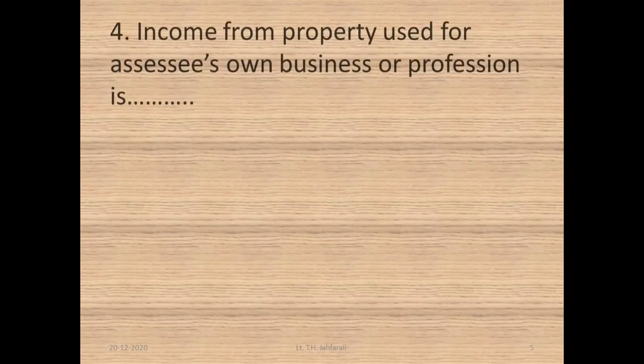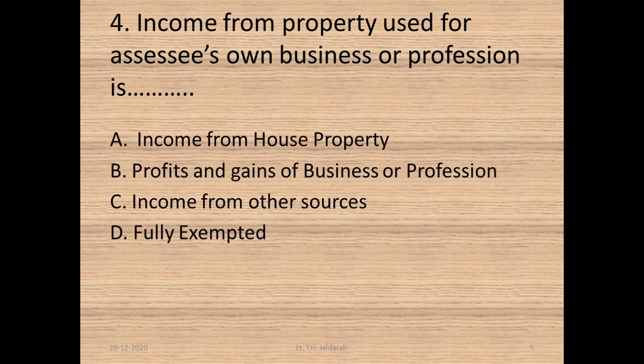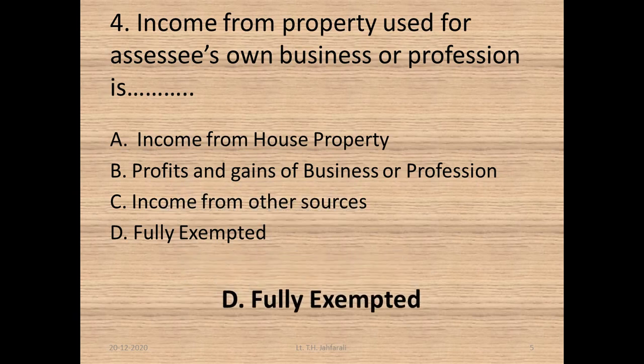Question 4: Income from properties used for assessee's own business or profession is — A. Income from house property, B. Profits and gains of business or profession, C. Income from other sources, D. Fully exempted. Option D: Fully exempted.